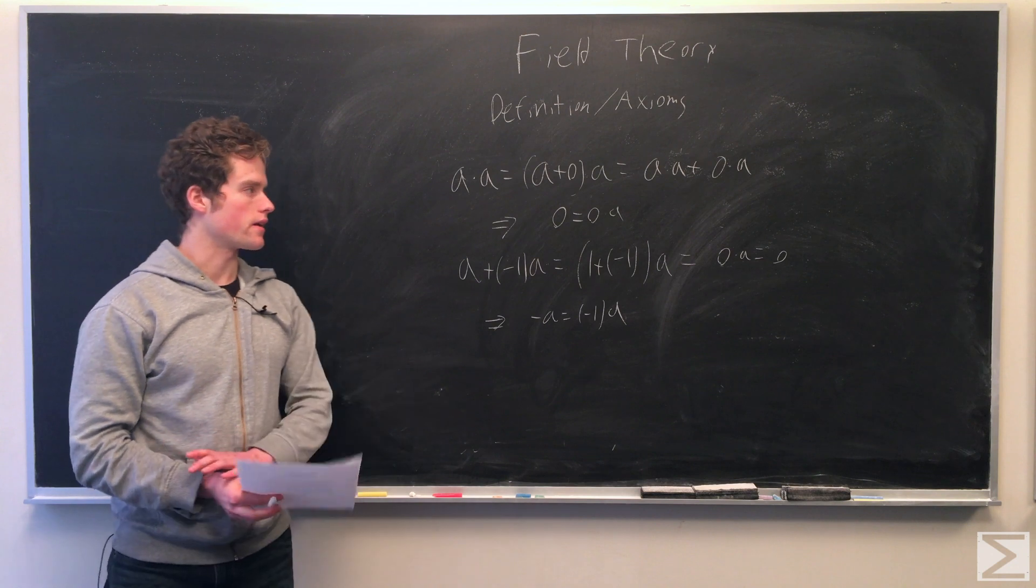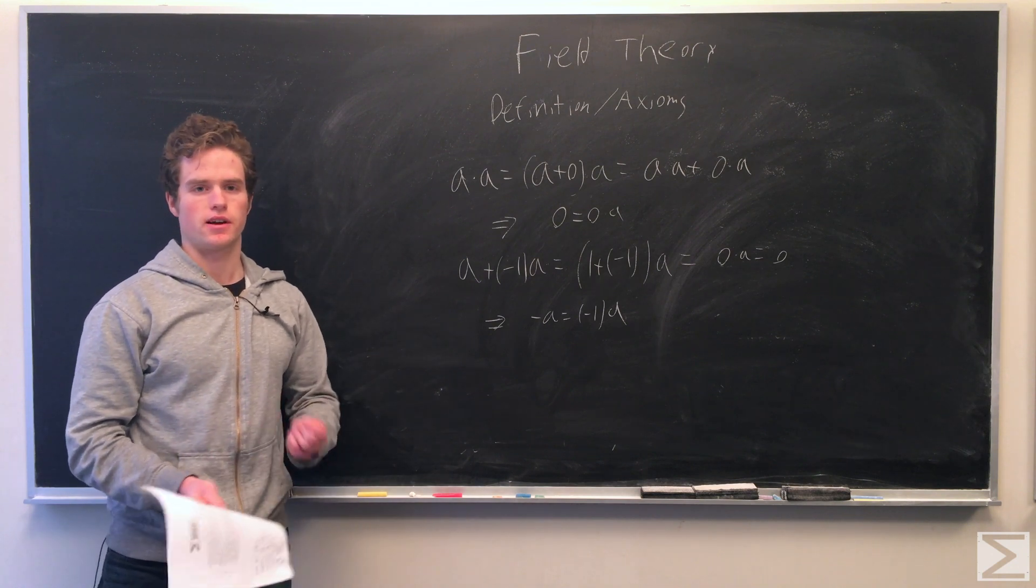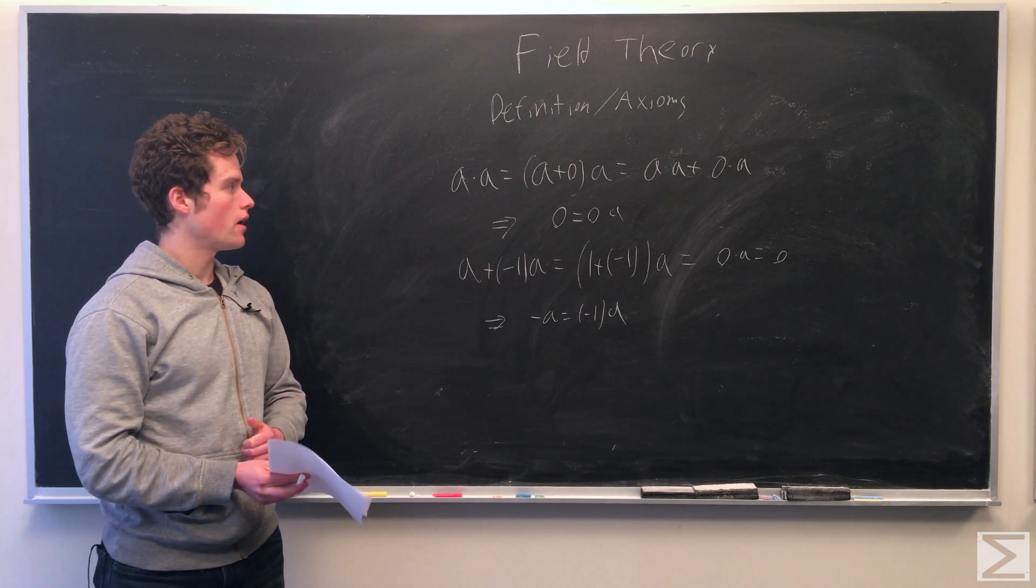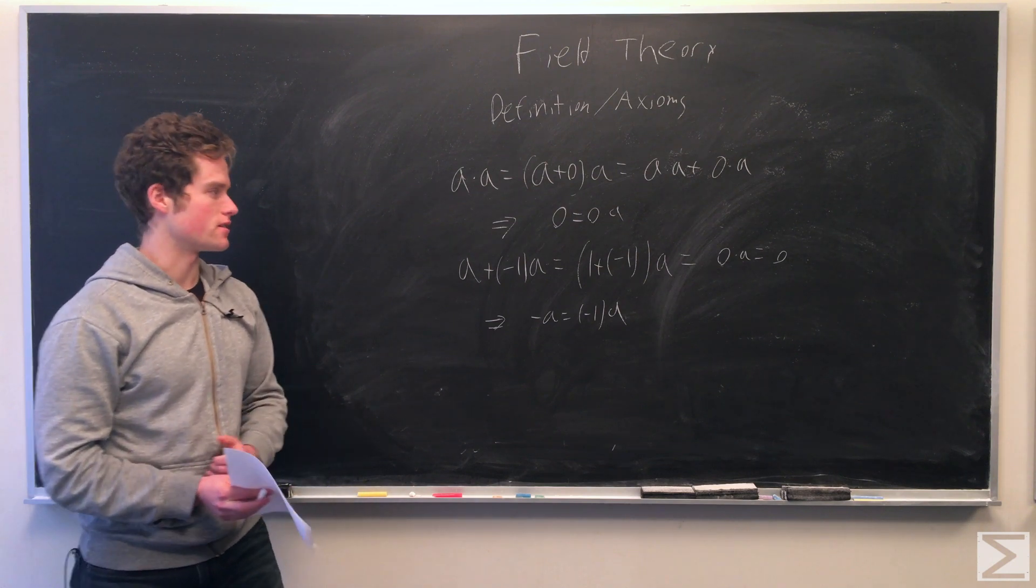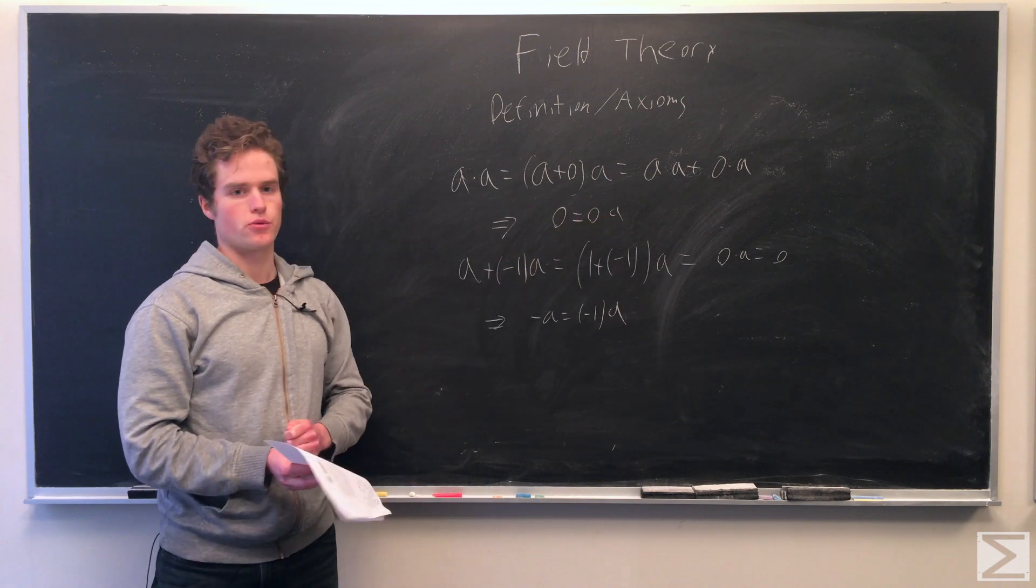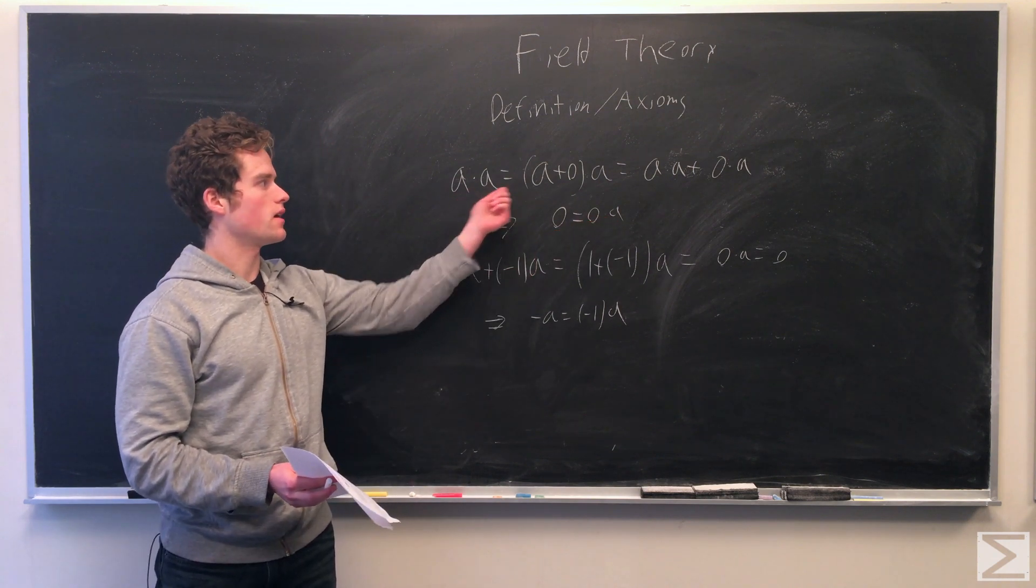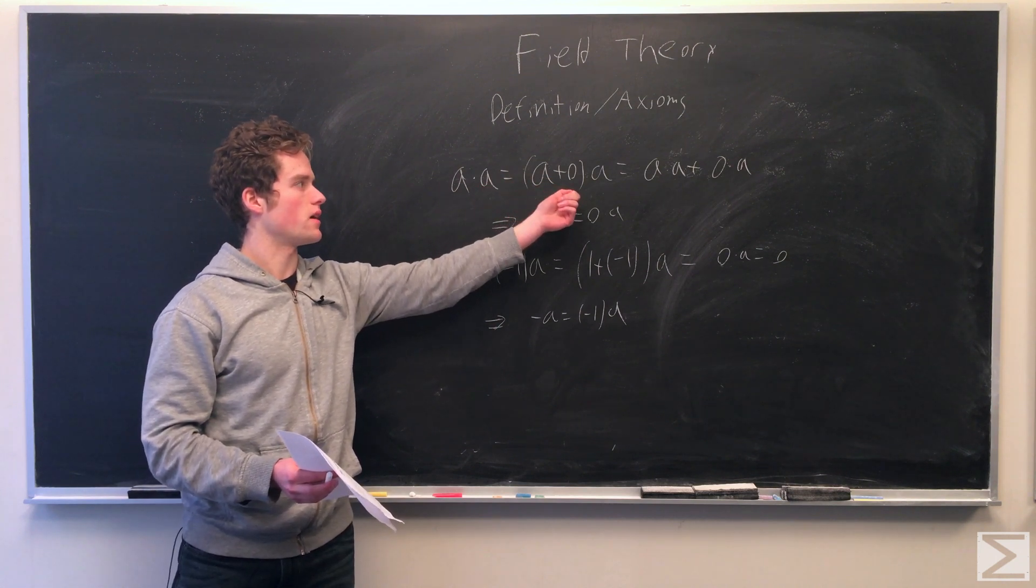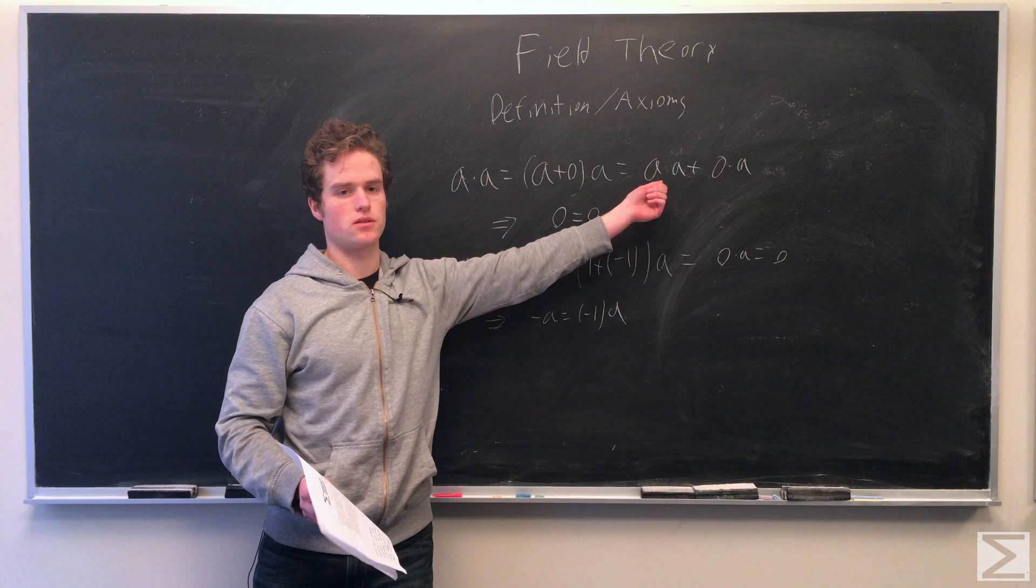So unlike rational numbers, given just our axioms, we're not given some seemingly obvious things that we need to prove. One obvious thing is that zero times some element of F gives you zero. You can prove this easily: just consider A times A. This is A times (A plus zero). A plus zero equals A. So this is (A plus zero) times A, which is A times A plus zero times A.